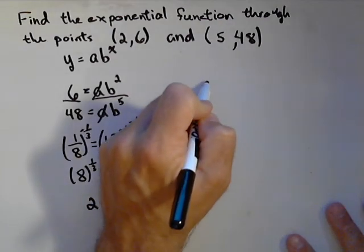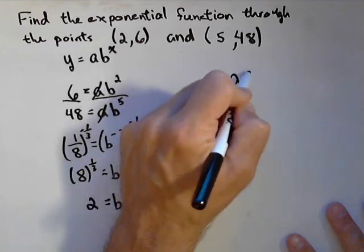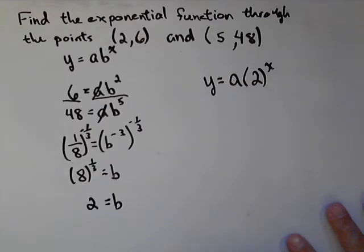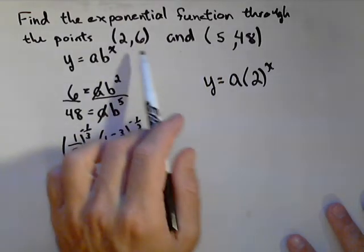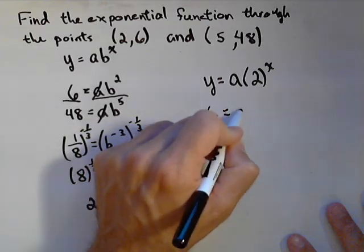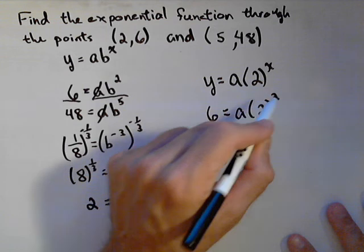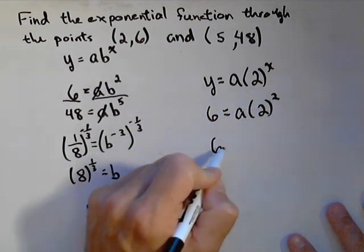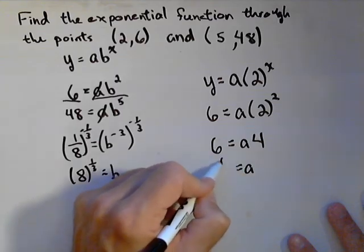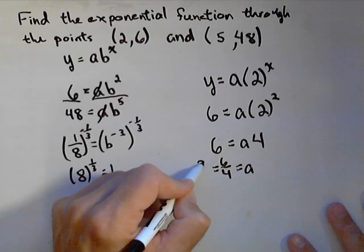So let's see what we have for a model now. We have y equals a times two to the x. So we still need to find our y-intercept, basically our initial value. Now, with linear functions, what we do is we find our slope, then we plug in a point to get our y-intercept. Nothing different here. We're gonna plug in either one of our points for x and y. So I'm gonna use this point. I plug six in for y equals a times two squared. So I got six equals a times four. Divide both sides by four. I get a equals six over four, or three halves.